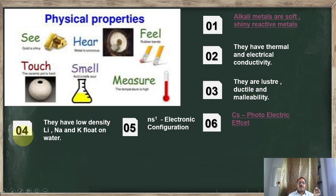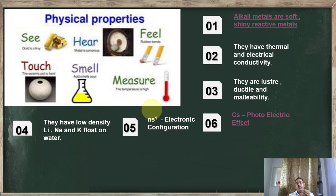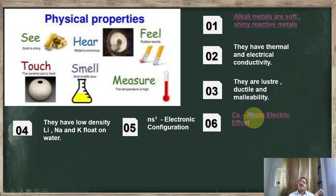Property four: these metals are very soft and have low density, hence they float on water. Property five: all elements have only one electron in their outermost shell, so the general electronic configuration is ns¹, which holds good for all elements from lithium to cesium. Property six: cesium shows the photoelectric effect — when sunlight falls on it, it ejects electrons — and this is why cesium is used in solar panels.